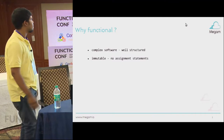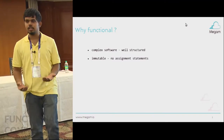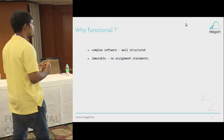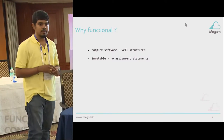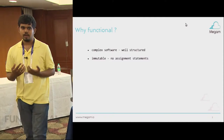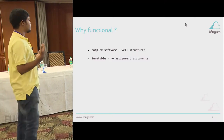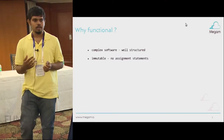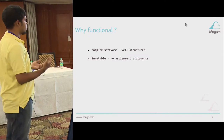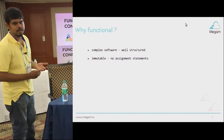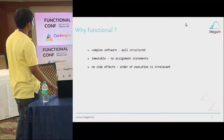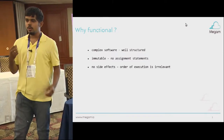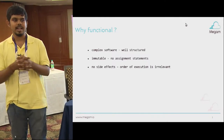Why functional? We know software is getting complex, and as it gets really complex, you want your software to be well-structured. We all know about immutability — there are no assignment statements when you're writing functional code. And functional programming is all about not having any side effects.